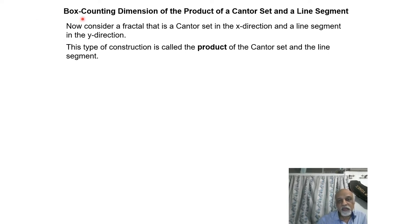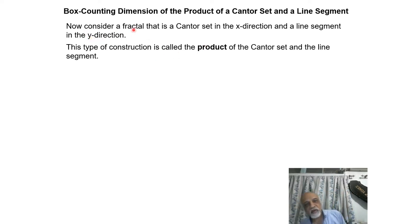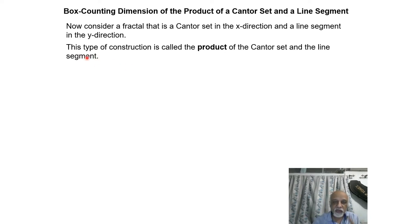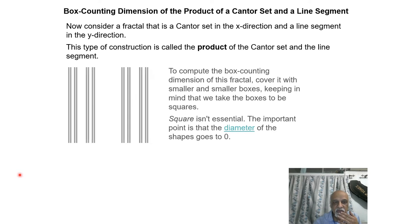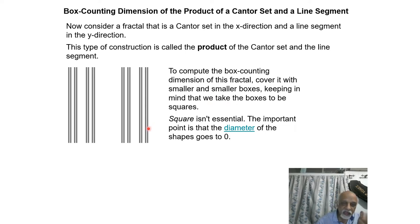Now I'll discuss what the dimension of the product of two fractal objects will be. Take the example of a Cantor set and a line segment: if you multiply a unit line segment by a Cantor set, we need to understand how the object looks. The Cantor set is in the x-direction and the line segment is in the y-direction, perpendicular to it. We call this the product of the Cantor set and the line segment. To compute the box counting dimension of this, we cover it with smaller and smaller boxes.